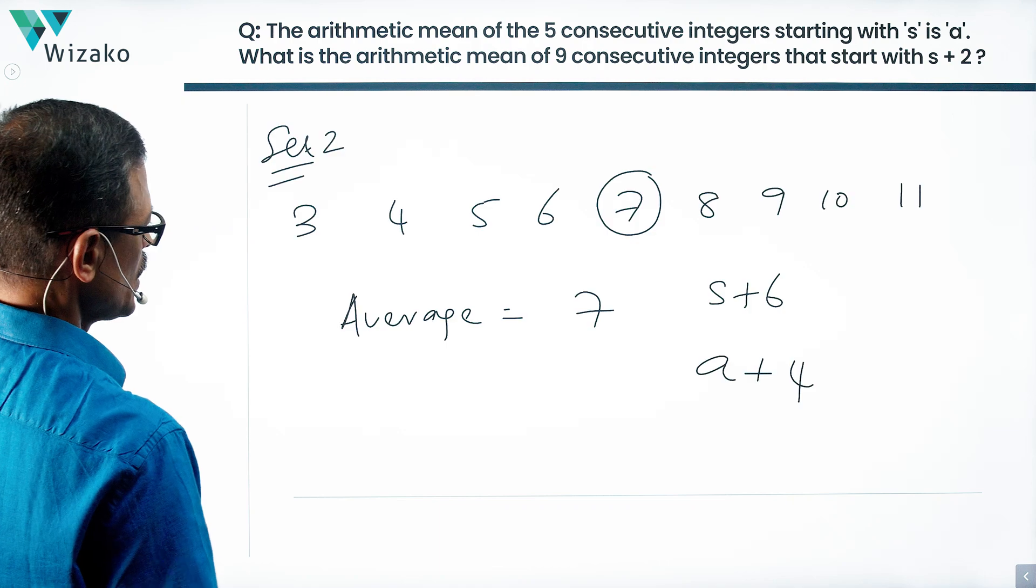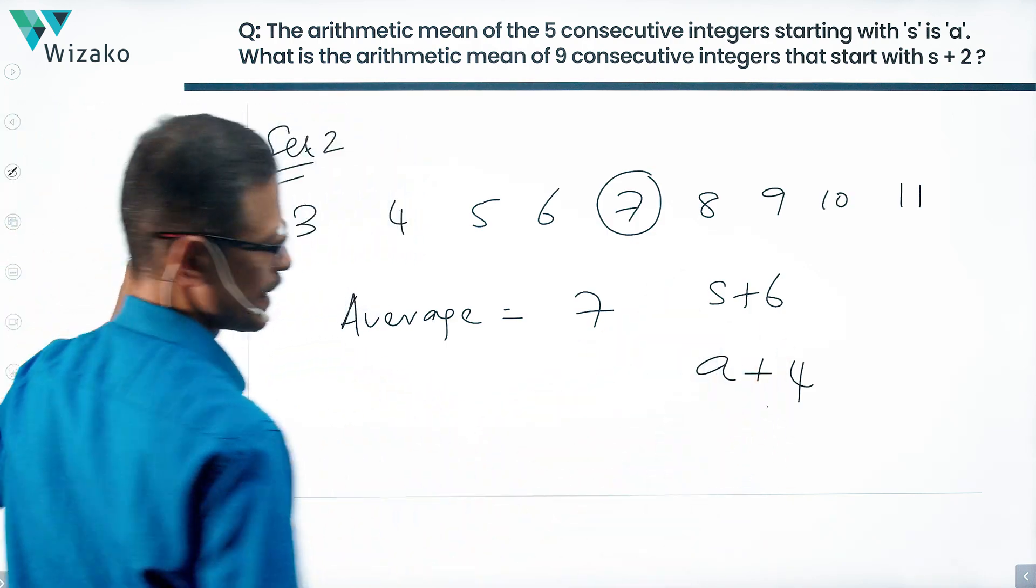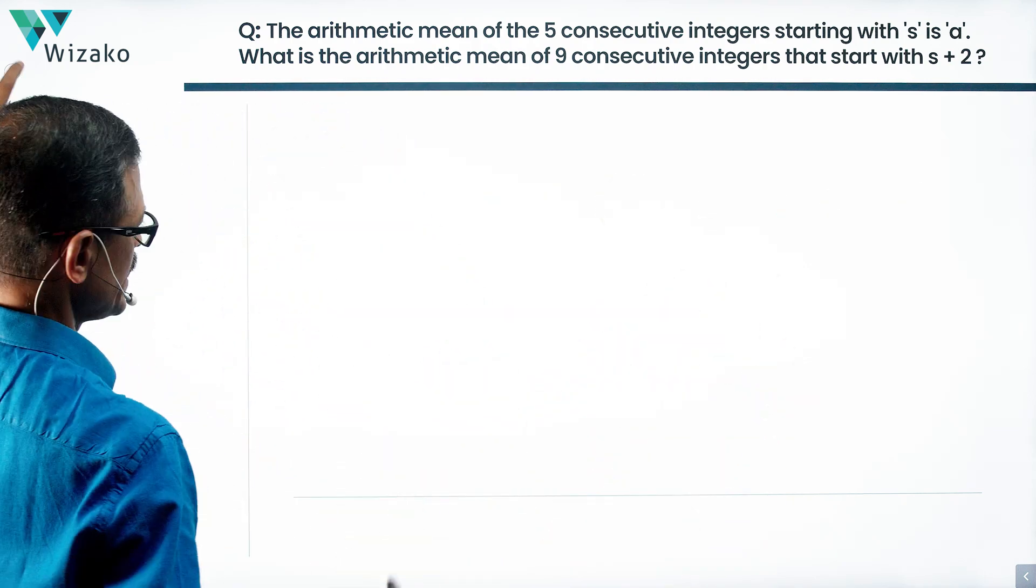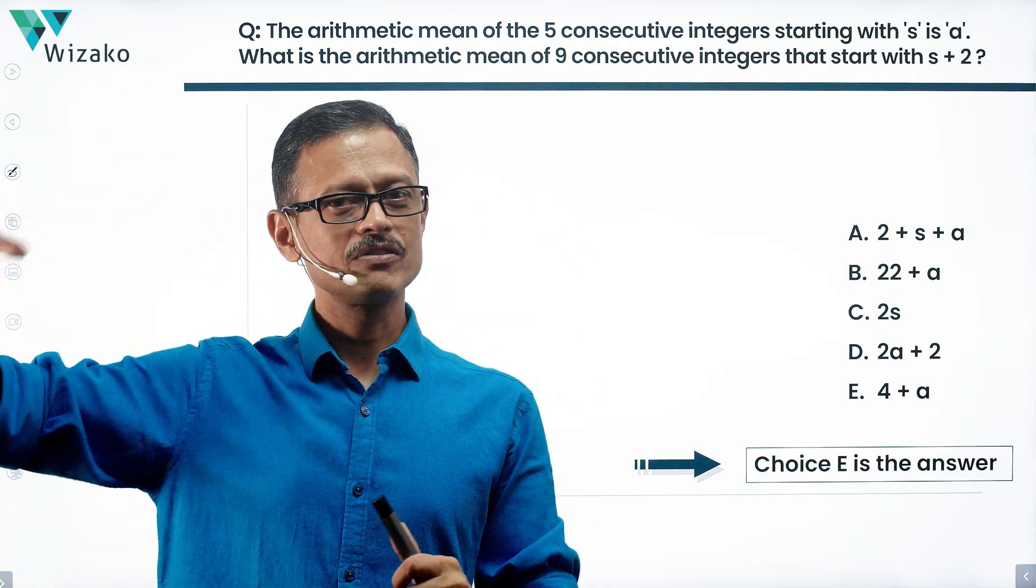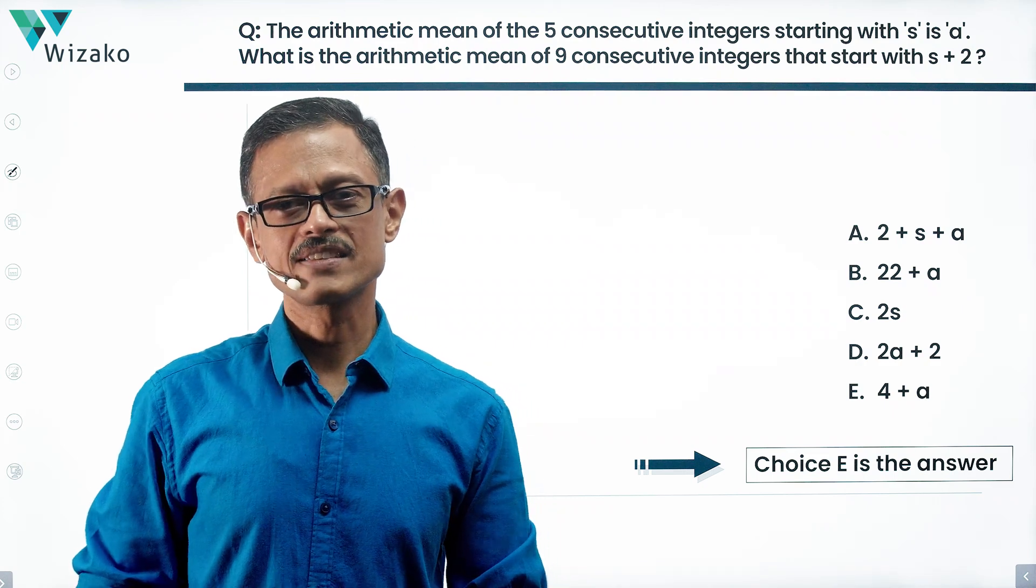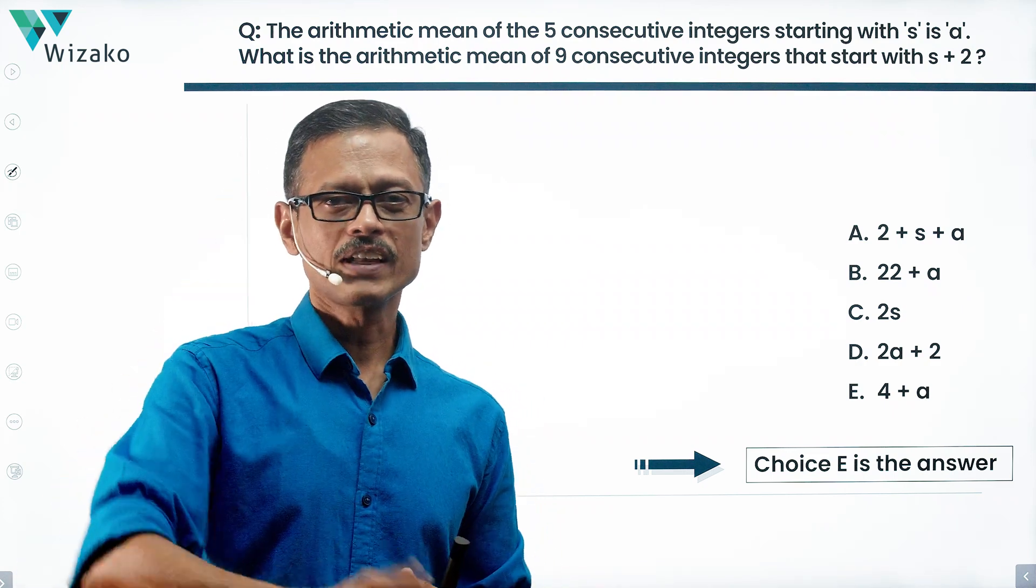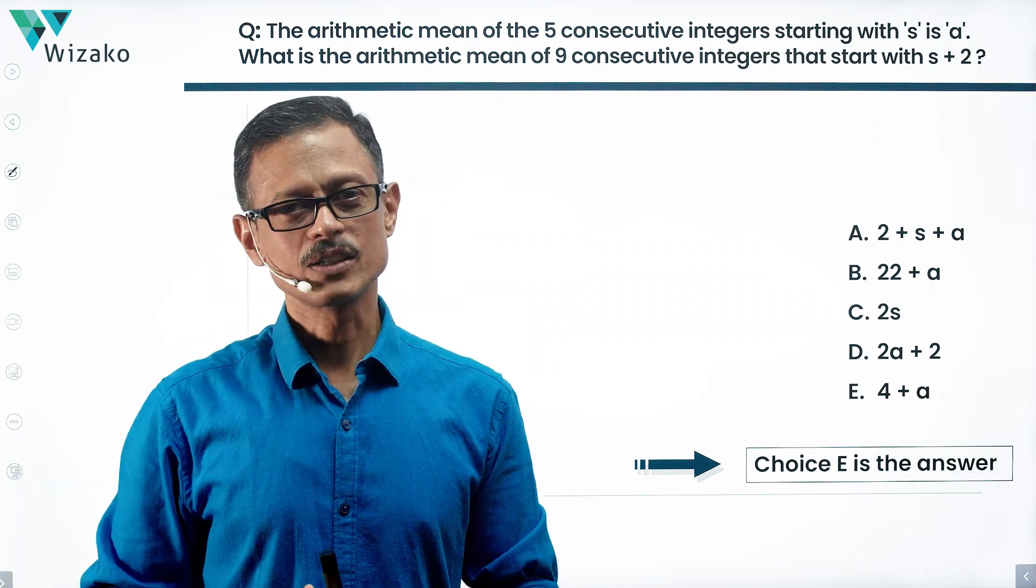Choice E is the correct answer. One of these two I was looking for, and I got A plus 4. The quickest way to solve these questions is to use the rule they've defined for S and A, assume a value for S, and work from there. You'll get the answer in the quickest possible time.